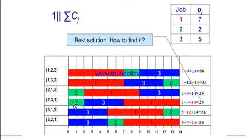If you try sequence 2, 1, 3: job two requires two hours, so it finishes at 2. Then 7 more gives us 9, and the best one is 23. This sequence finishes at 2, then 9, then 14. So 14 plus 9 plus 2 equals 25.